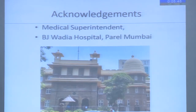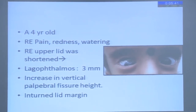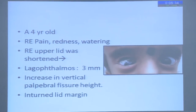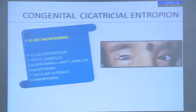We had this four-year-old child who presented with right eye pain, redness, and watering. There was an upper lid which was shortened. He had lagophthalmos in the right eye of approximately three millimeters and an increased vertical palpebral fissure height. The lid margin was in-turned. When we analyze any eyelid case, it's a good idea to look at the anterior and posterior lamella — the anterior lamella being the skin and the orbicularis.